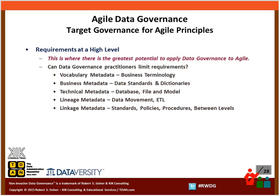Can the data governance practitioners limit their requirements? I believe there is a way to limit what we ask for. There are five primary categories of metadata I often talk about: vocabulary metadata, business metadata, and technical metadata at a bare minimum. We want to make certain we get business terminology well defined, data standards defined, and data dictionary entries for data used in our organizations. On the technical side, we want to document databases and files. We also want to make sure we're getting data movement metadata — the ETL metadata, the extraction rules, transformation rules, and loading rules. We also want to understand the linkage metadata: standards, policies, procedures, and relationships between business terminologies.